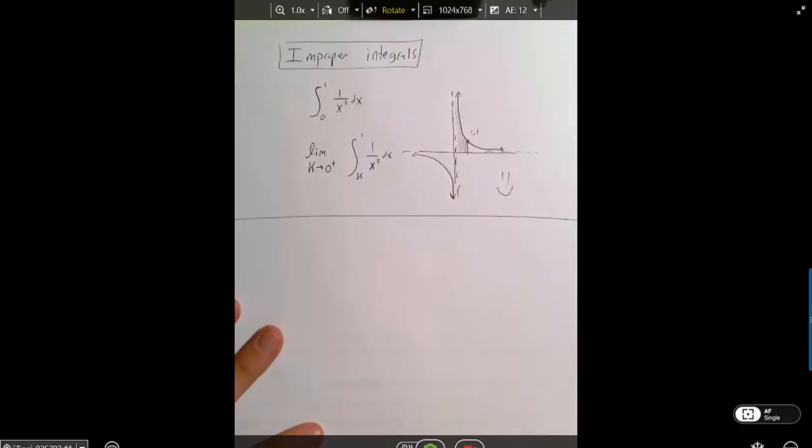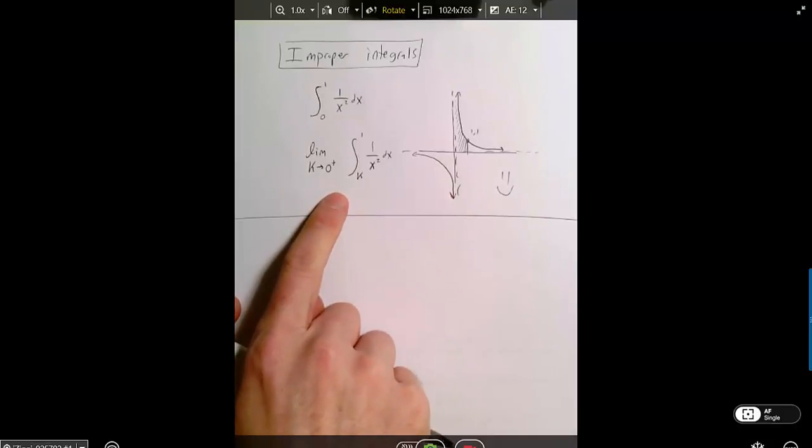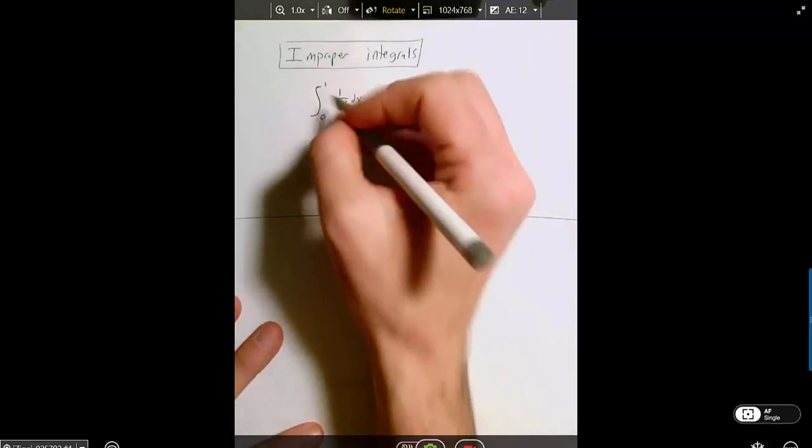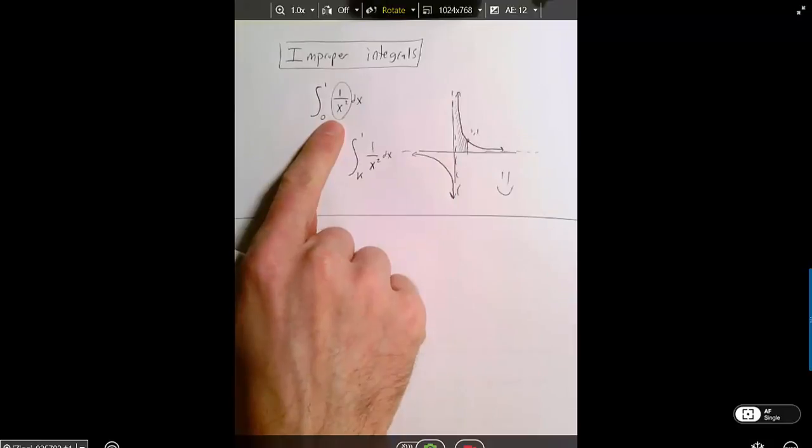Just like the Algebra 2 student, I'm worried that you're not thinking about the underlying concept, is there a vertical asymptote? I'm worried that you're just looking for things that look like this.